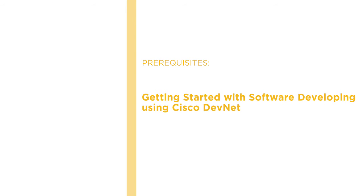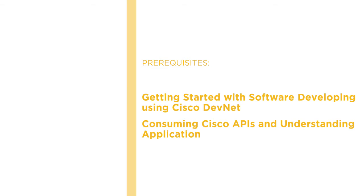Before beginning this course, I suggest viewing these two important prerequisite courses. This Getting Started course covers important contextual topics surrounding software design, source control, and the construction of a simple web application. It also covers some Python and Bash basics you'll need to understand for this course. This second course covers two key topics: interacting with a variety of Cisco product APIs and the fundamental techniques used in DevOps. Some of these DevOps concepts are relevant for network automation too.